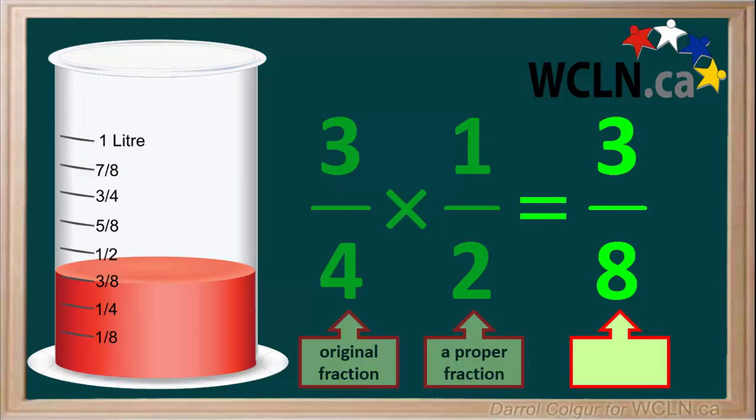3 quarters times 1 half comes out to 3 eighths, which is smaller than the original fraction, 3 quarters.